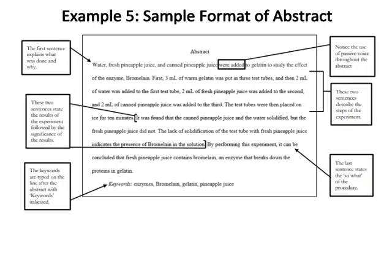Example five: sample format of an abstract in the sciences field, in which key parts are given. The first sentence explains what was done and why. It is important to notice the use of passive voice throughout the abstract. The first two sentences describe the steps of experiments. After that, two sentences state the results of experiments followed by the significance of the results. The last sentence states the 'so what' of the procedure. Keywords are typed on the next line after the abstract, with the word 'keywords' italicized.